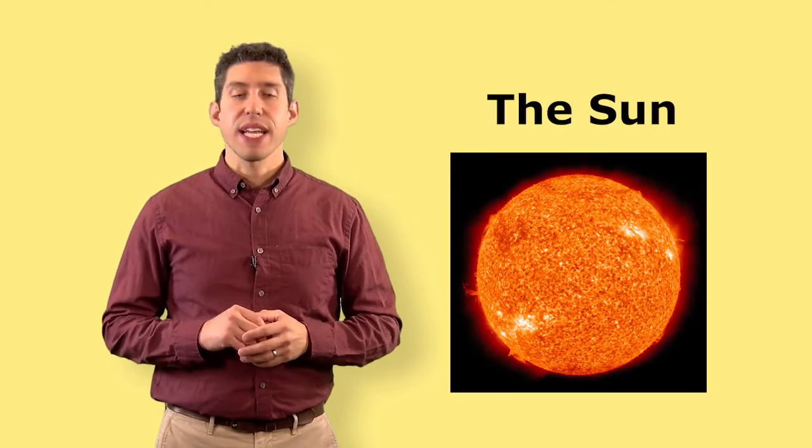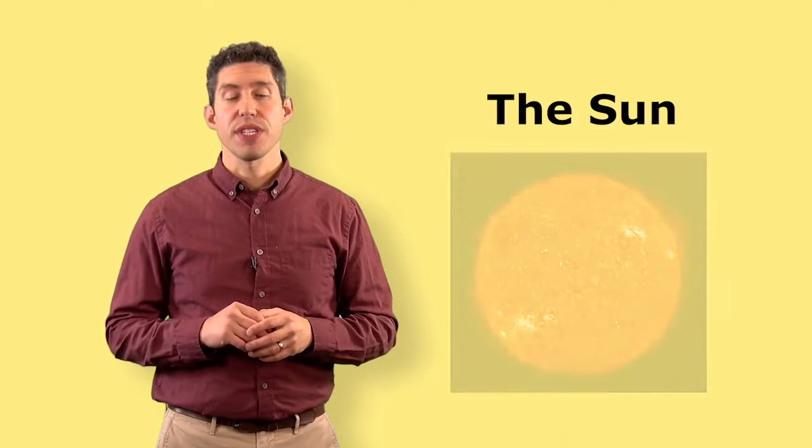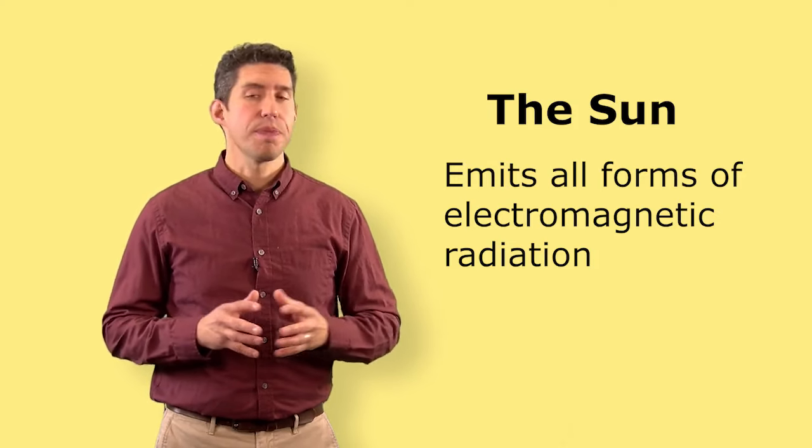Let's begin by going back to the solar resource, or the sun. In a previous lesson, we discussed the sun as being the largest fusion reactor in the solar system, and emits all forms of electromagnetic radiation. So we know the sun is bright, but how do we begin to relate that sunlight in the sky to the efficiency of a photovoltaic module?